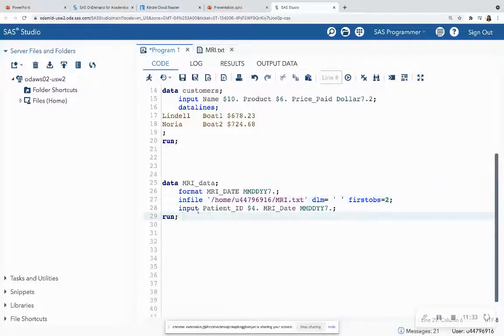So in this example, I'm just inputting two of the columns from that text file, the patient ID and then the MRI date in the MMDDYY7 format. Notice that I also added that format statement so that I can have that date readable to me.